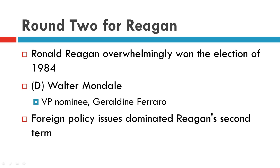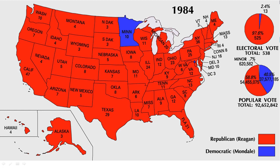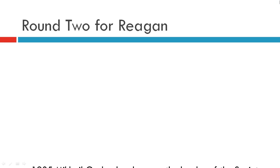Foreign policy issues dominated Reagan's second term. Looking at the election map, you can see he received almost 98% of the electoral vote.